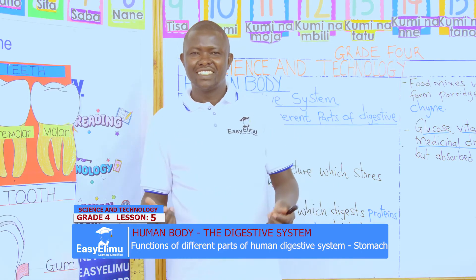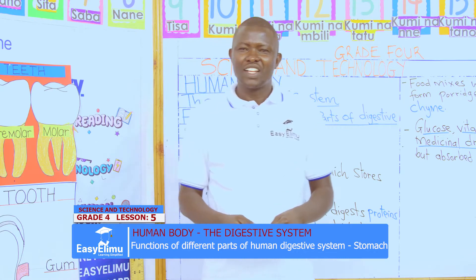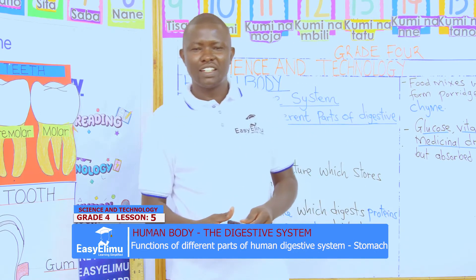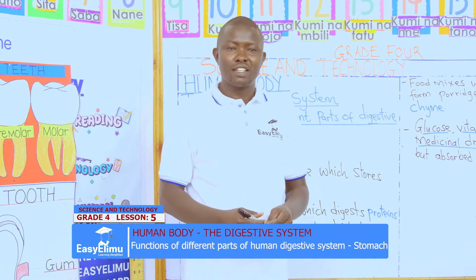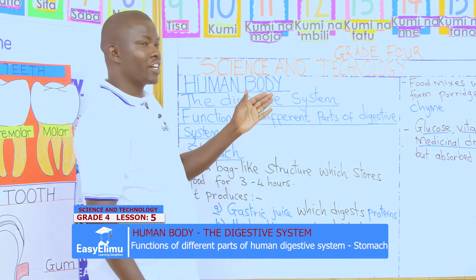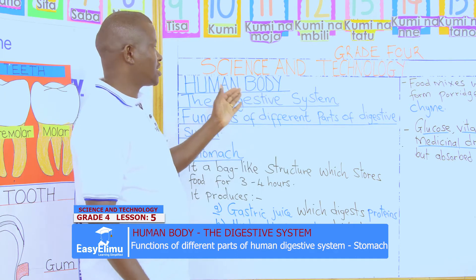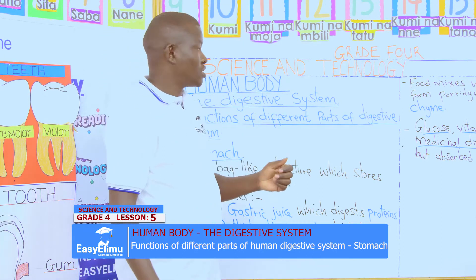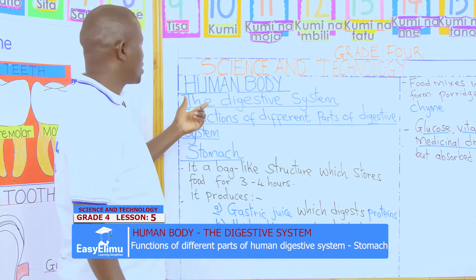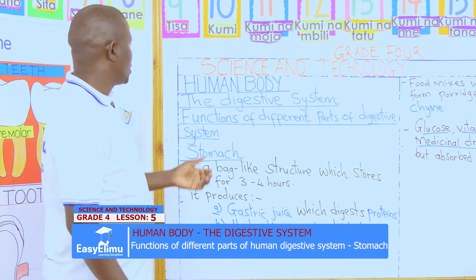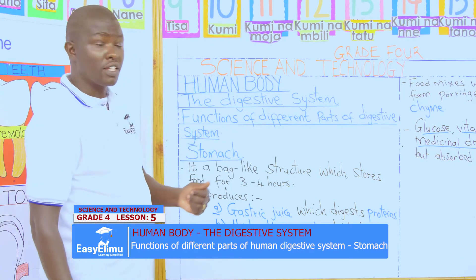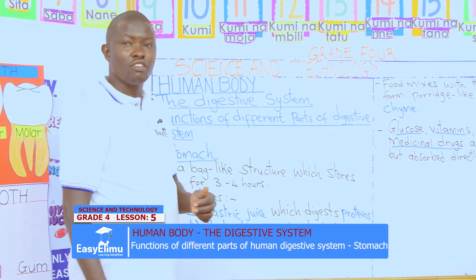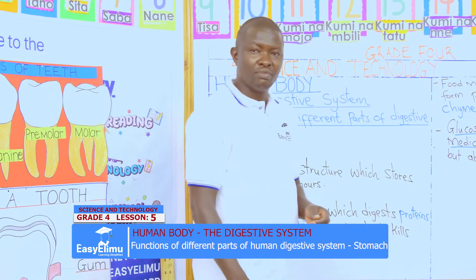Hello my learner, this is teacher Jonathan. Welcome to Easy Elimu Learning Simplified. In grade four science and technology, our strand is human body, digestive system — on the functions of different parts of the digestive system.